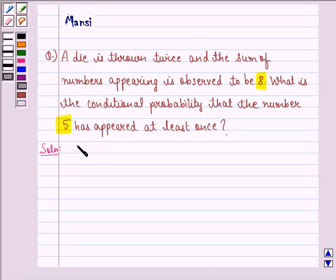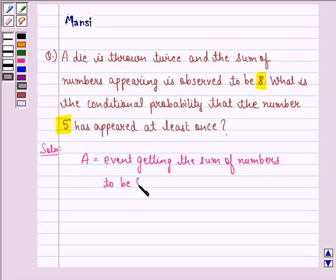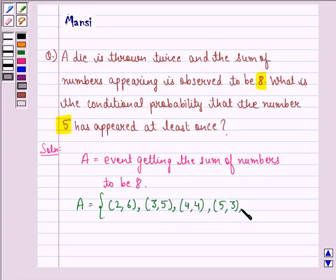Here we shall consider the following events. Let event A be the event of getting the sum of numbers to be 8. So, the sample space for event A will be 2, 6, 3, 5, 4, 4, 5, 3 and 6, 2.